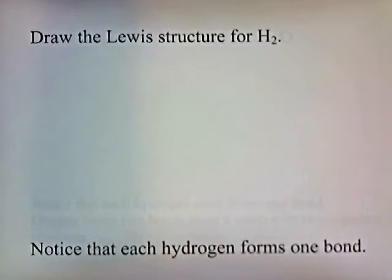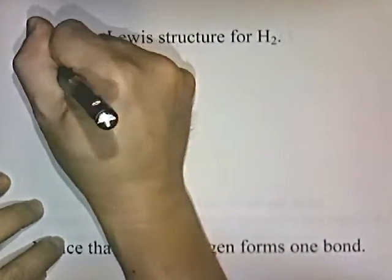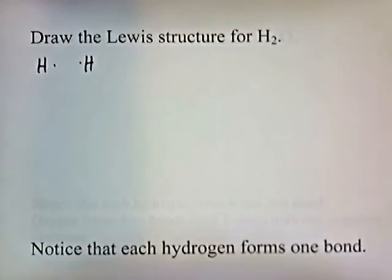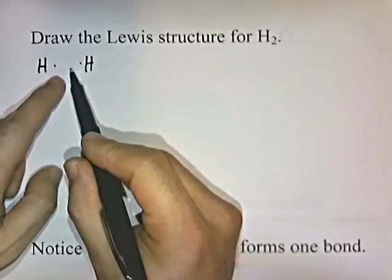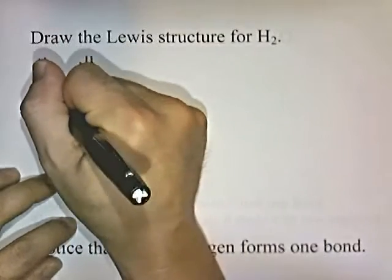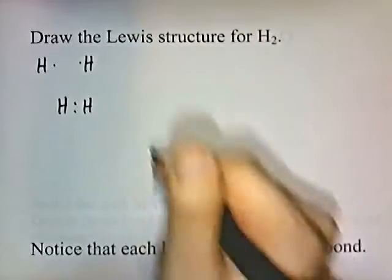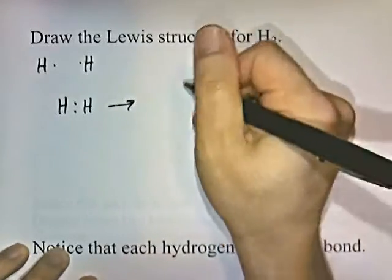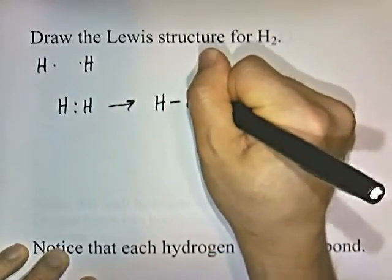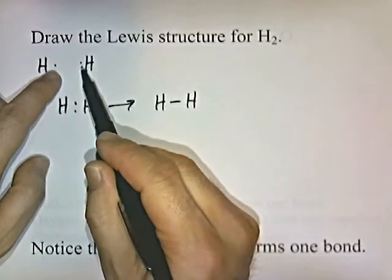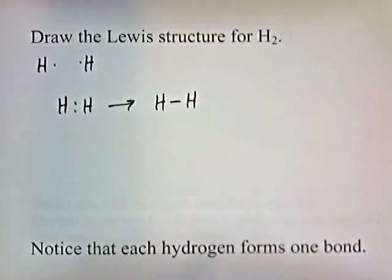Let's draw the Lewis structure for H₂. Hydrogen is in group one, so here are the valence electrons, and we just pair them up. We can substitute a single line, and that's all there is to it. You draw the dot diagram, pair up any unpaired electrons. Notice that each hydrogen forms one bond.